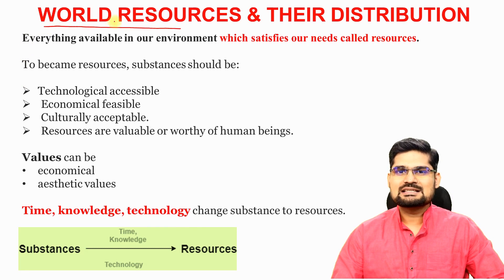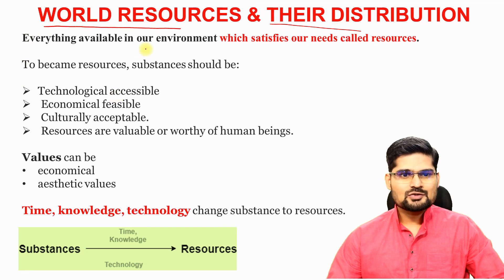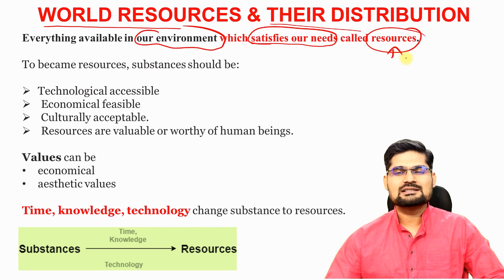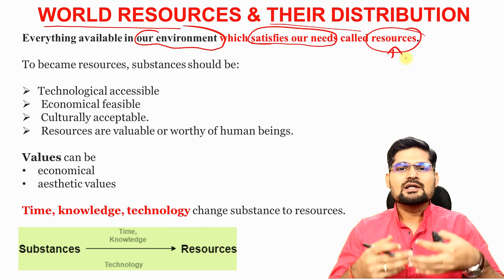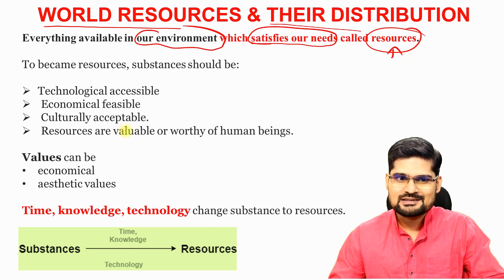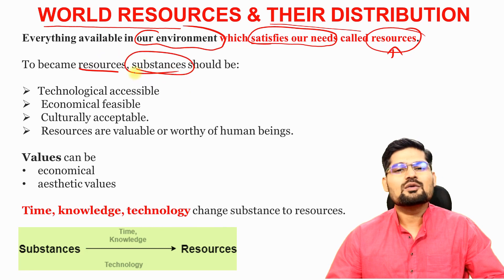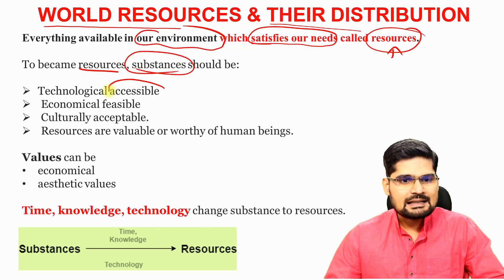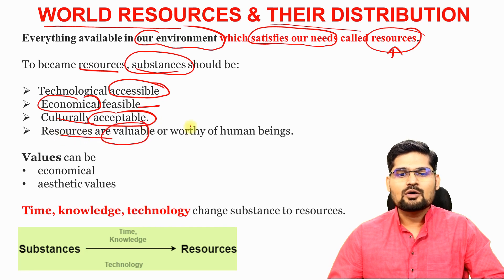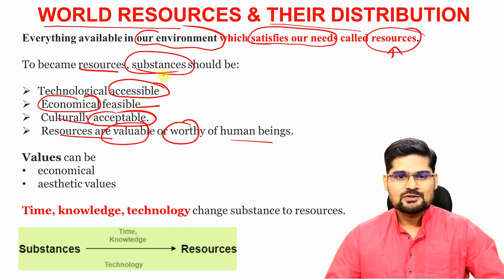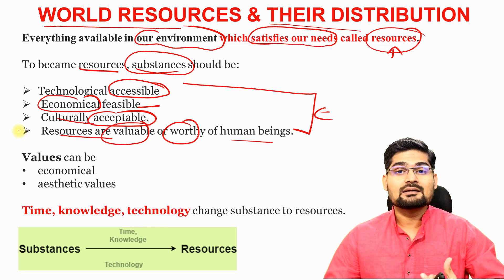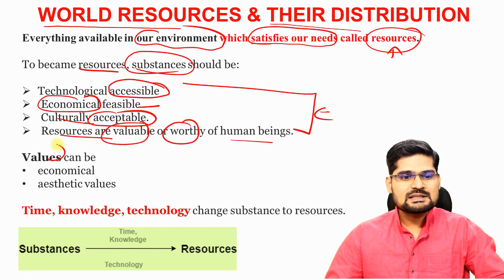Everything that is available in our environment which satisfies our needs is basically called a resource. The simplest definition of a resource is something which is of utility to us human beings, and which helps us achieve our goals and satisfy our needs. To become resources, substances or materials should be technologically accessible, economically feasible, culturally acceptable, and valuable or worthy for human beings.